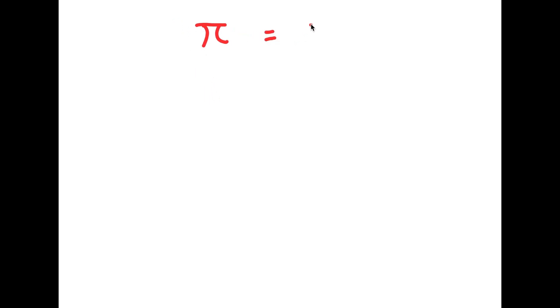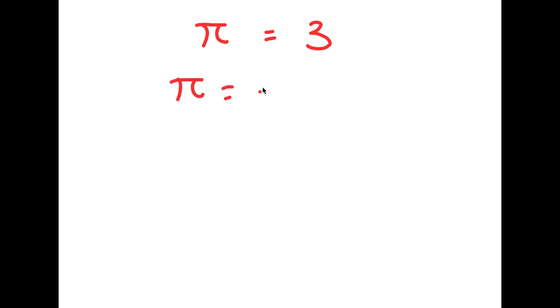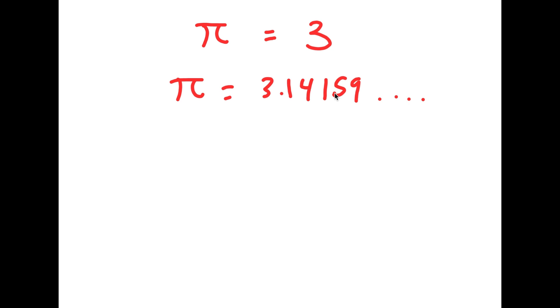In this video, I'm going to be proving that pi is equal to 3. As you probably already know, pi is an irrational number, meaning it doesn't have a whole number value — it's actually equal to 3.14159 and on and on forever. So in this video, I'm going to be proving that pi is actually equal to 3, and not the irrational number that we all know it is.